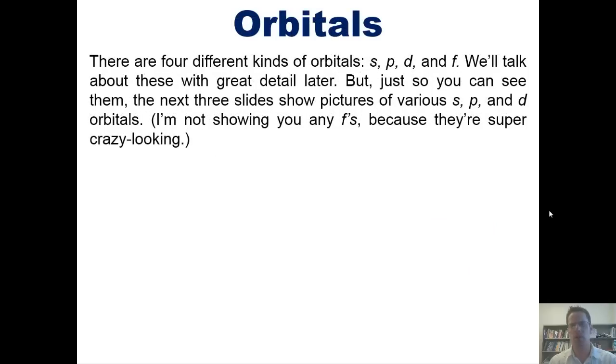So, as it turns out, there are four different kinds of orbitals: s, p, d, and f. And I'm not the person who selected those letters. I'm just the messenger. We'll talk about these in greater detail later on. But just so you can see them, the next three slides show pictures of various s, p, and d orbitals. I'm not showing you any f orbitals because they're super crazy looking, but you're welcome to look them up on the internet.